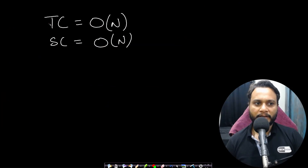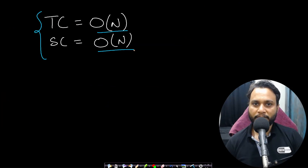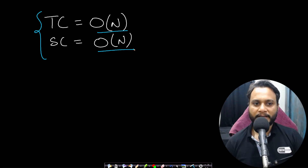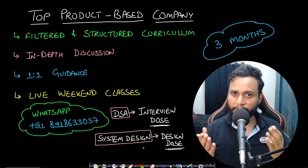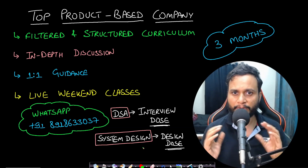The time complexity of this approach is O(N) and the space complexity is also O(N), because the tree could be a skewed tree.